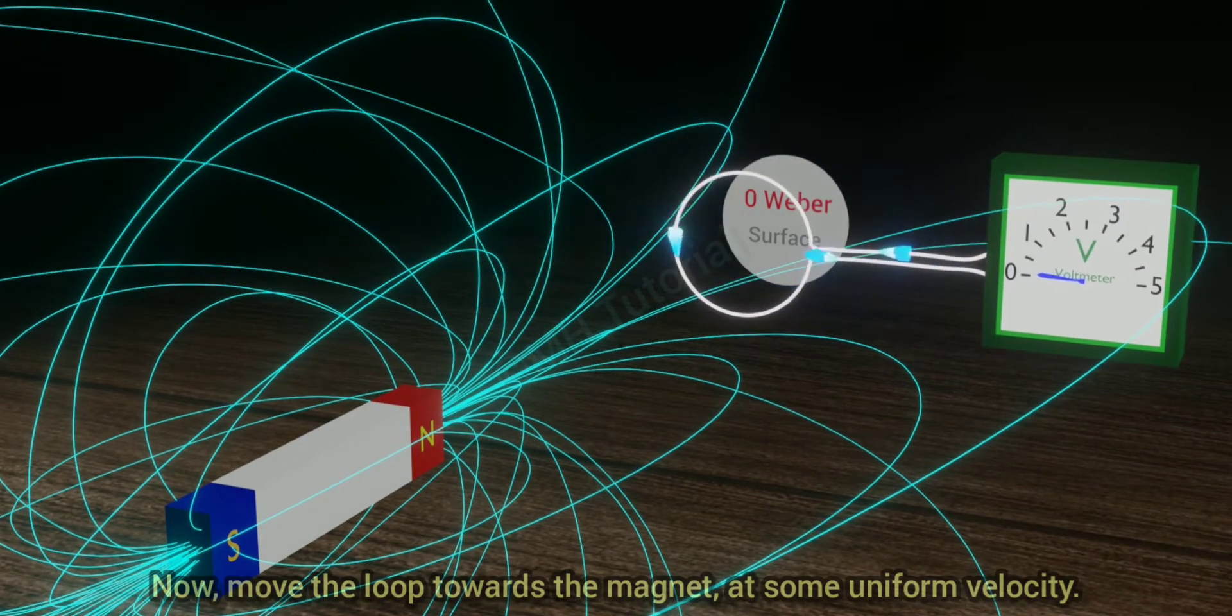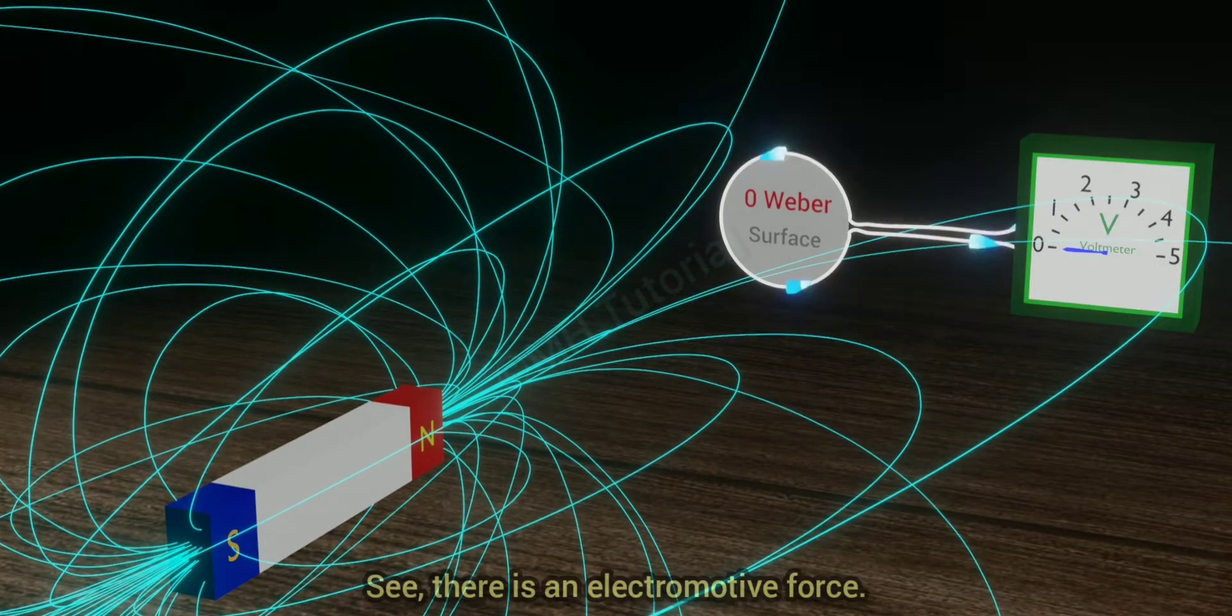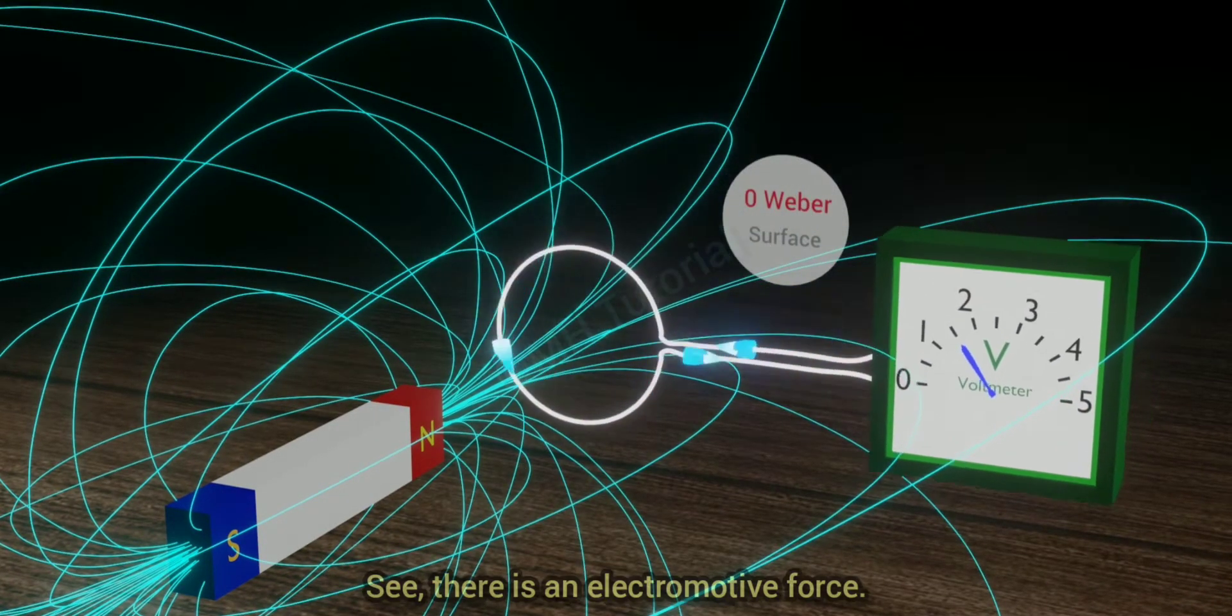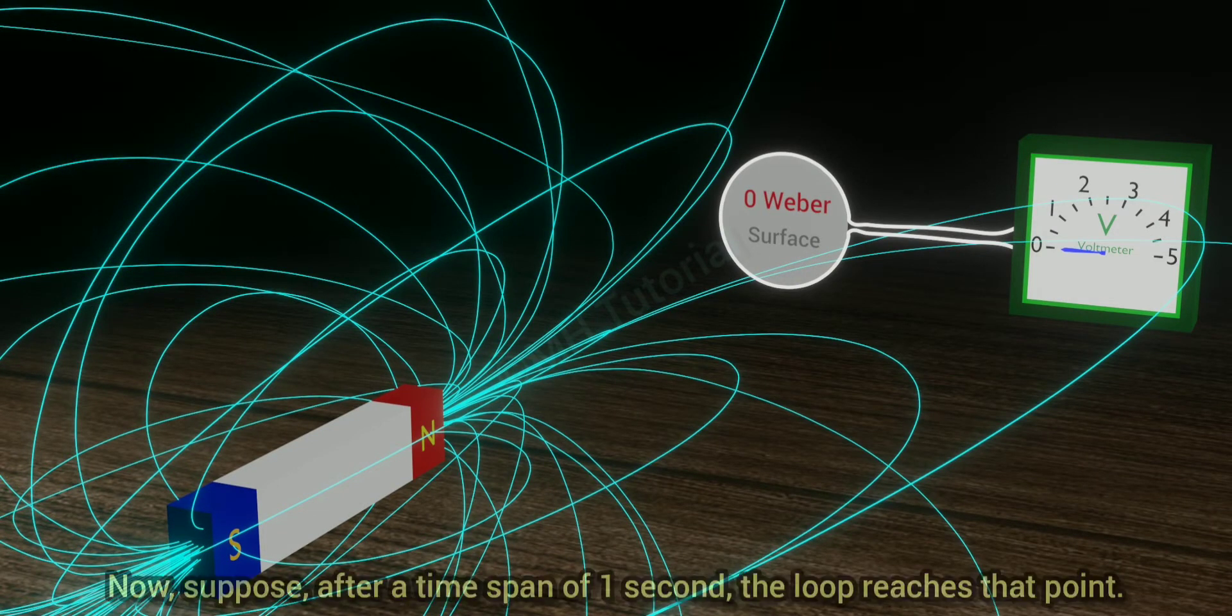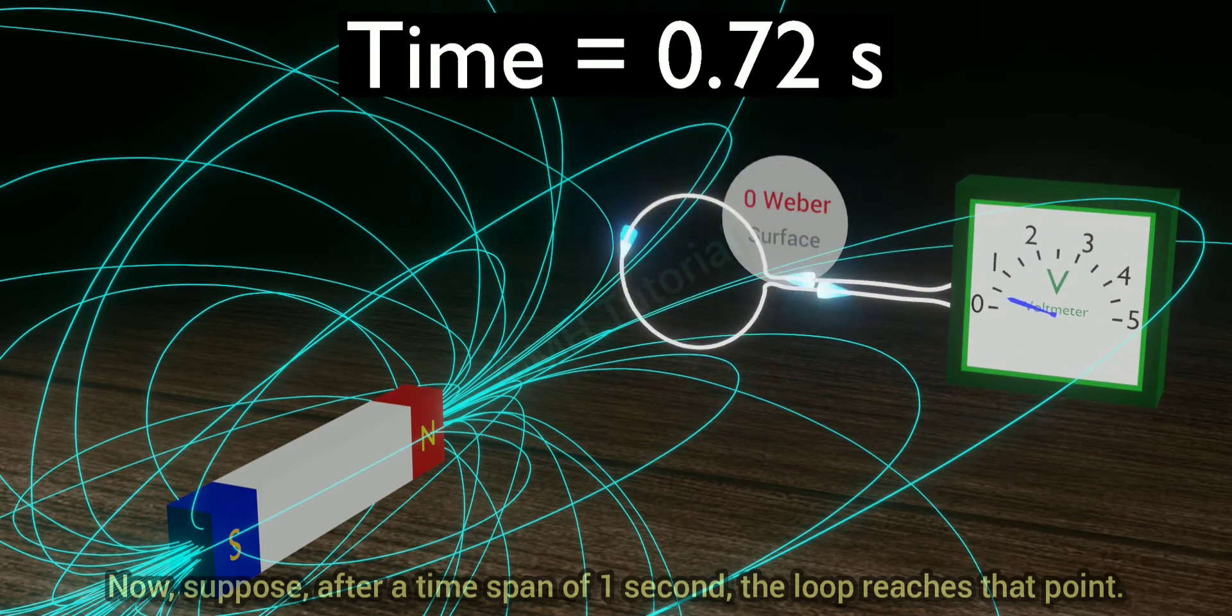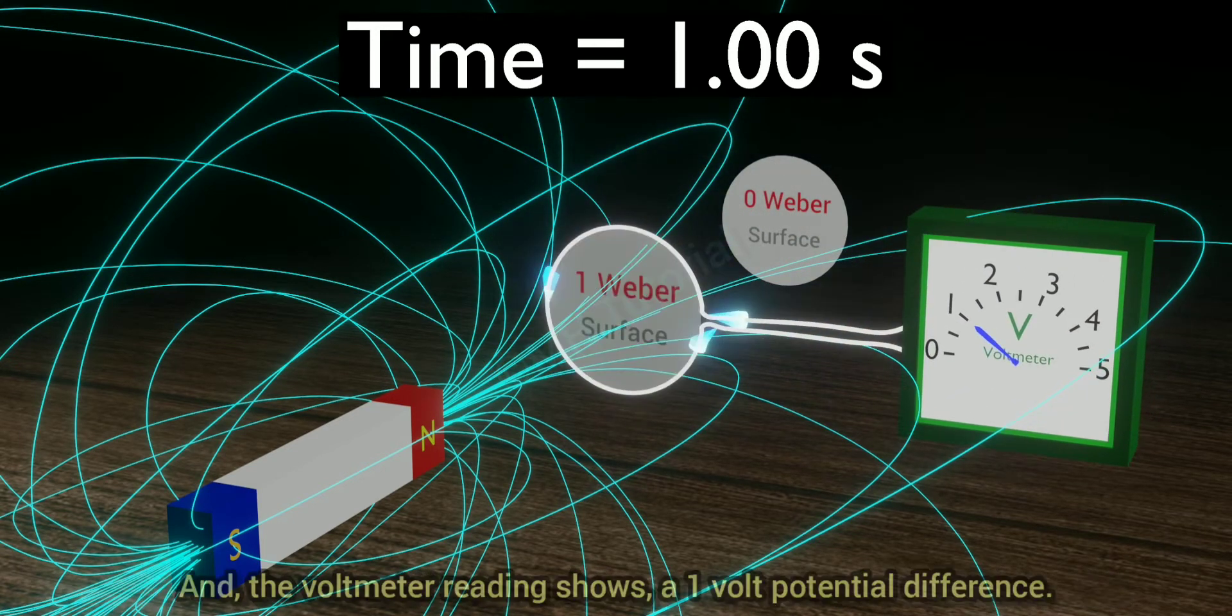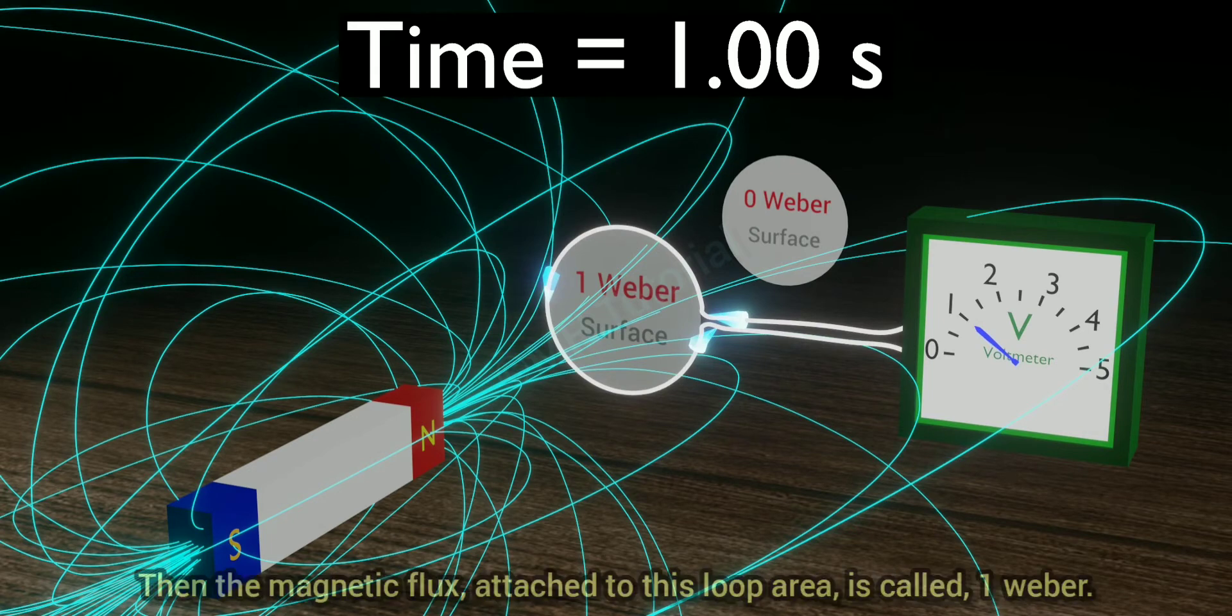Now move the loop towards the magnet at some uniform velocity. See, there is an electromotive force. Take a slow motion. Now suppose after a time span of one second, the loop reaches that point and the voltmeter reading shows a one volt potential difference. Then the magnetic flux attached to this loop area is called one Weber.